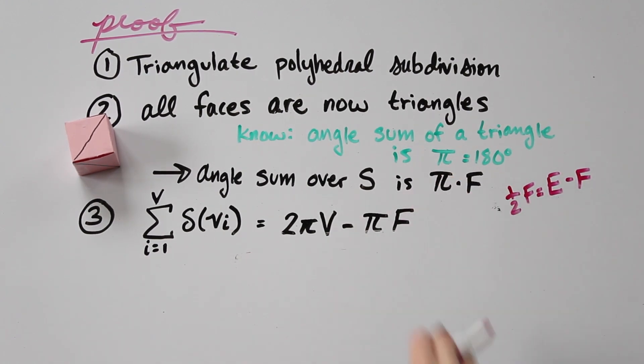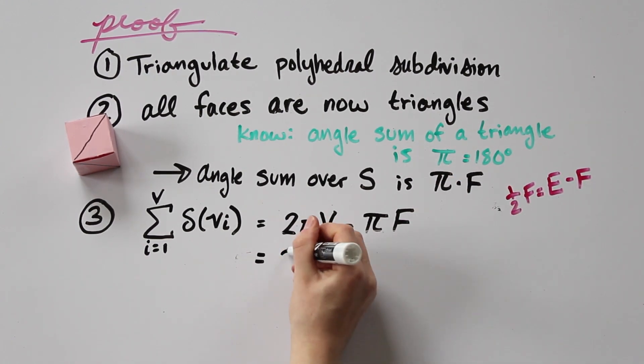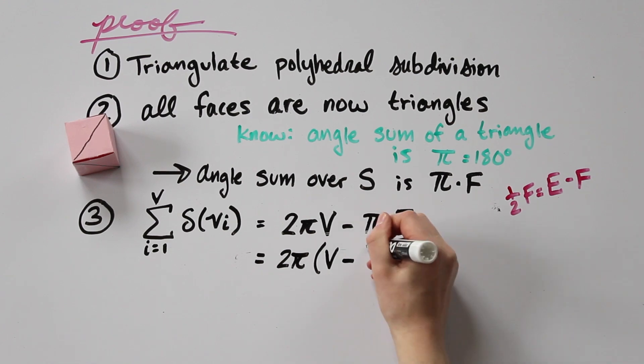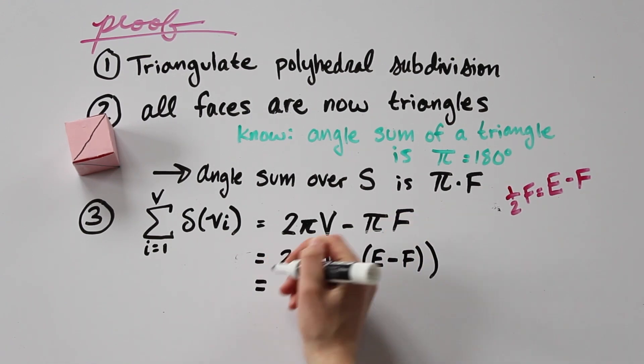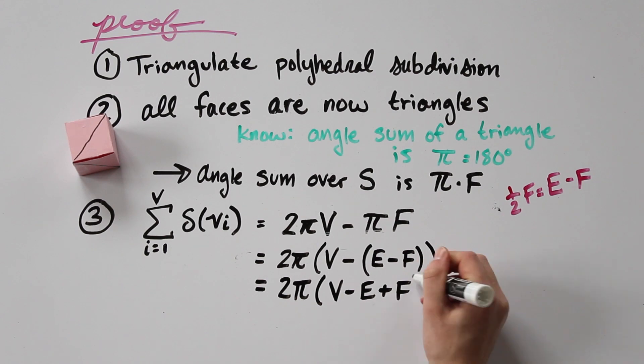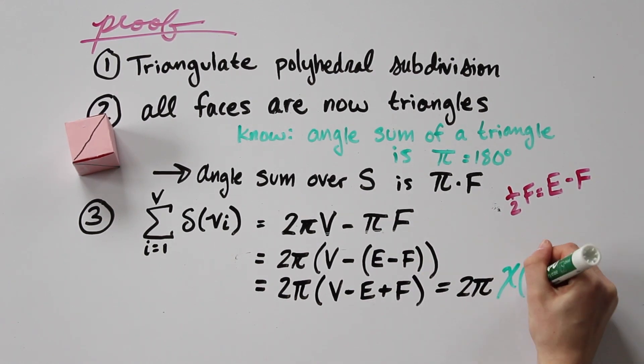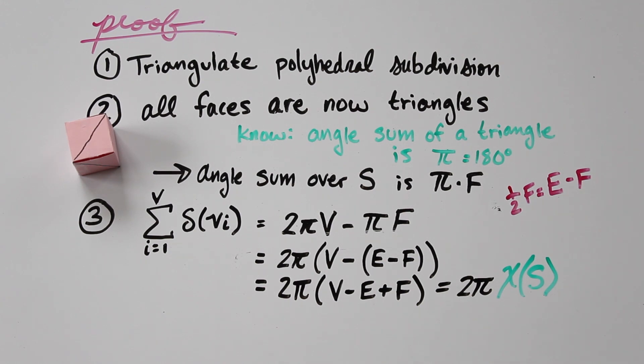So back to the sum of our angle deficiencies, we can factor out a 2π and we have V minus 1/2 F. We can substitute in the fact that we just figured out and then we have 2π times V minus E plus F, which just happens to be the definition of the Euler characteristic of S. Boom bada boom, that's the proof. So easy.